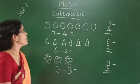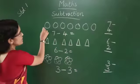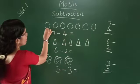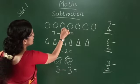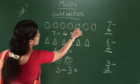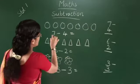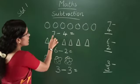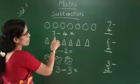All of you look at the board. How many circles? 1, 2, 3, 4, 5, 6, 7. 7 minus 4.